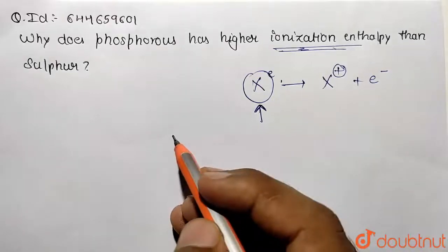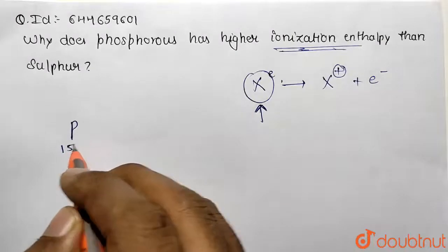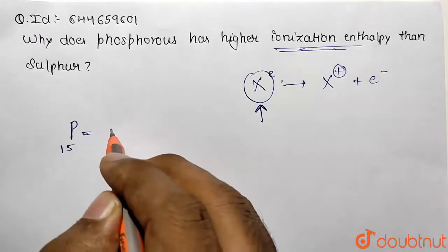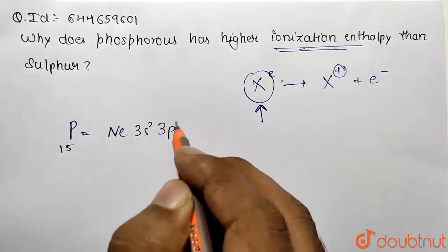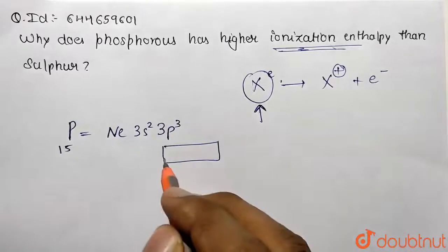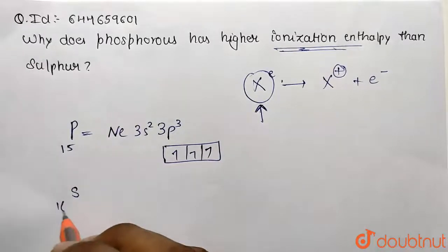Now understand the phenomena between phosphorus and sulfur. So phosphorus is basically having atomic number 15 and its configuration if you want to write then it's going to be [Ne] 3s² 3p³. So basically it is having half filled stable configuration in the p orbital and similarly if you understand for sulfur this is 16.